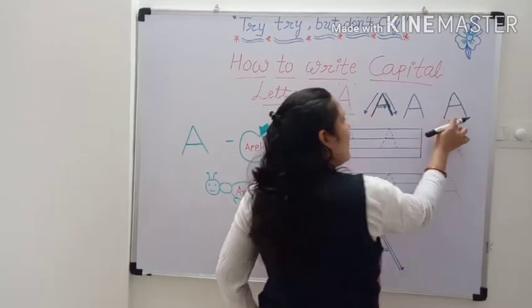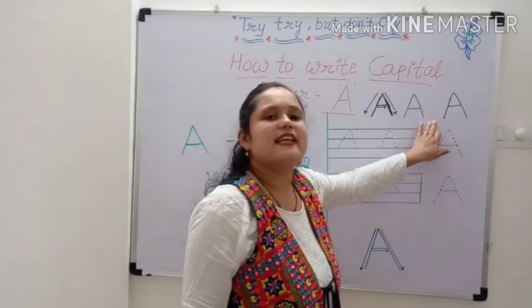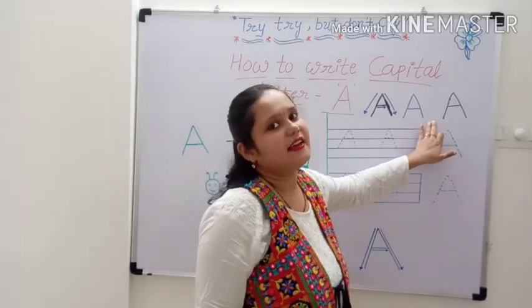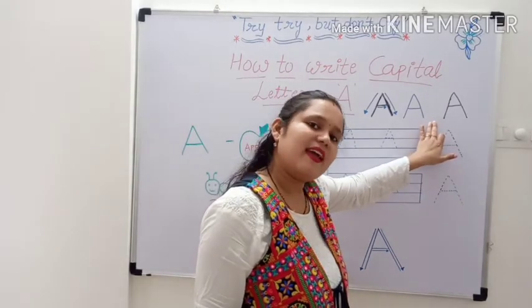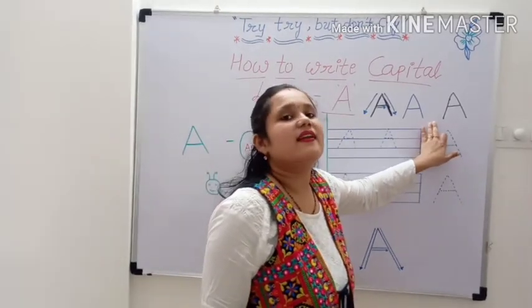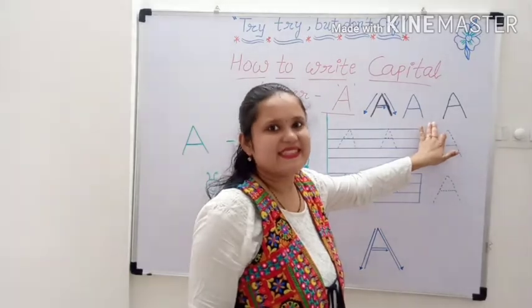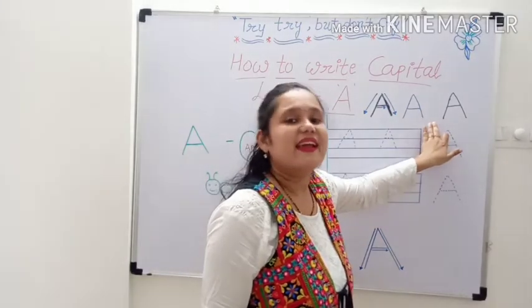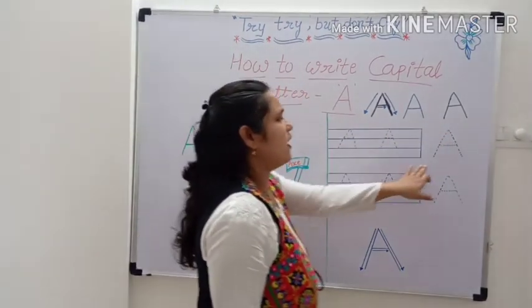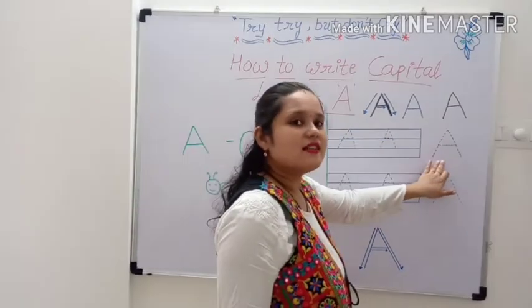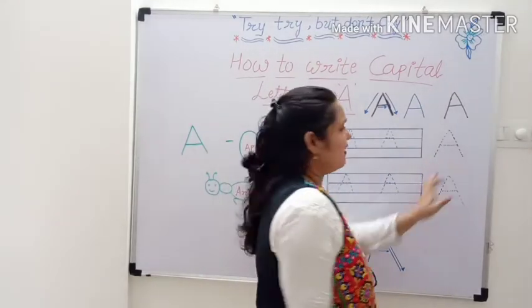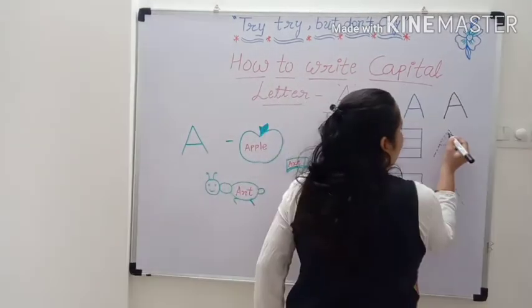A. This is letter A. Capital letter A. This is capital A. Now join the dots. A. Now join the dots and make A. Capital A.